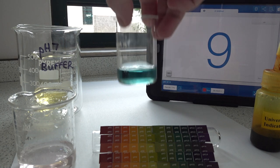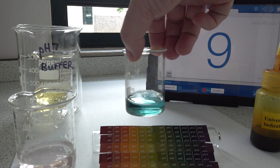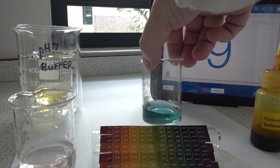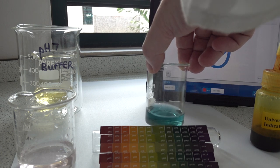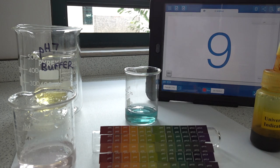On with the next one. We've got this pale green solution which we might determine is about pH 8. Maybe a little bit more, a little bit less. Let's have a look.